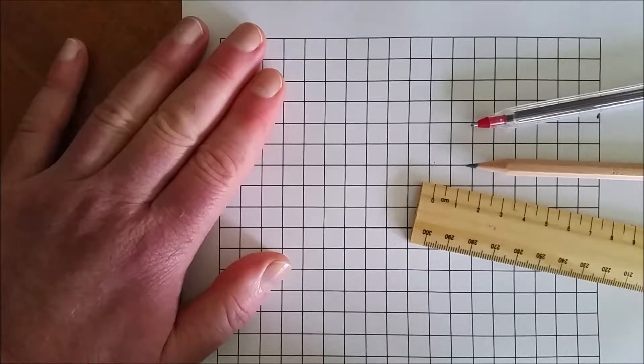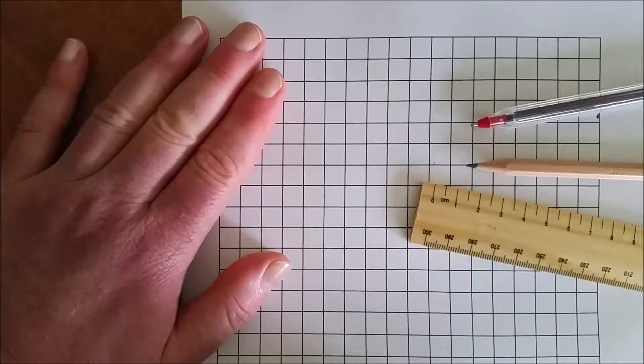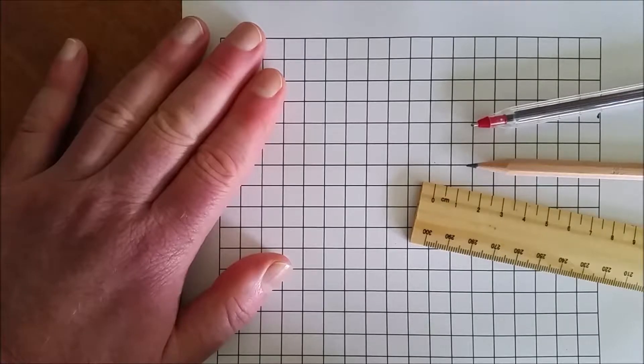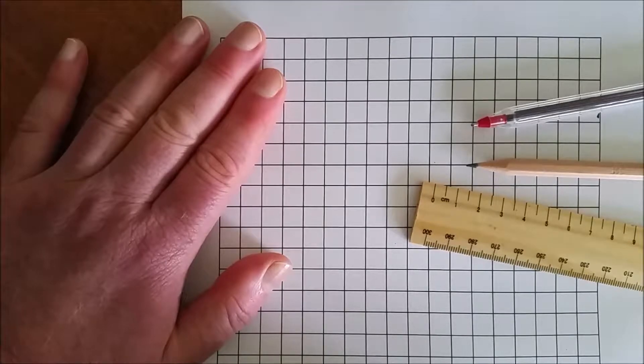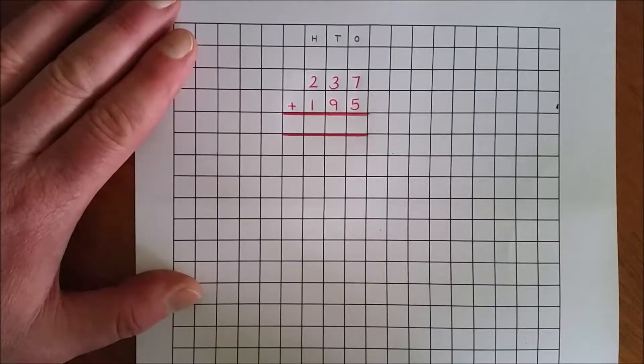The question is written in red pen or pencil with the working out done in grey lead. This will assist in distinguishing between the question and any working out that I will do. It will also allow me to rub out my working if I make a mistake without rubbing out the actual question. This is the traditional method for addition with an emphasis on place value.